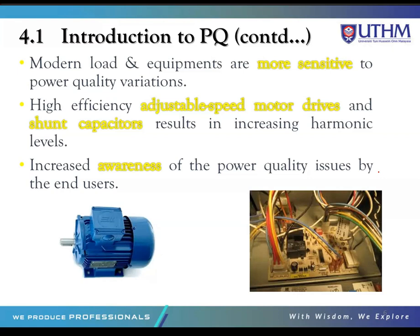Modern loads and equipment are more sensitive to power quality variations. High efficiency adjustable speed motor drives and shunt capacitors result in increasing harmonic levels. In an electrical power system, a harmonic is a voltage or current at a multiple of the fundamental frequency, produced by the action of nonlinear loads such as rectifiers, discharge lighting, or saturated magnetic devices. Increase in harmonics results in increased heating in equipment and conductors.